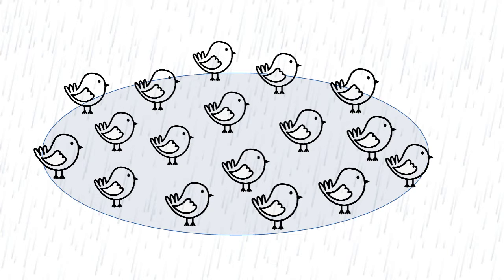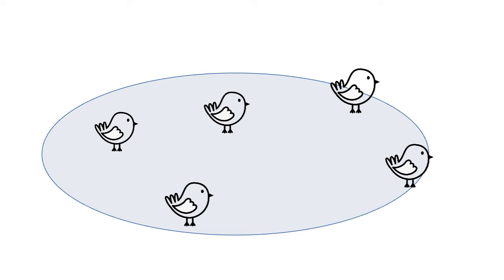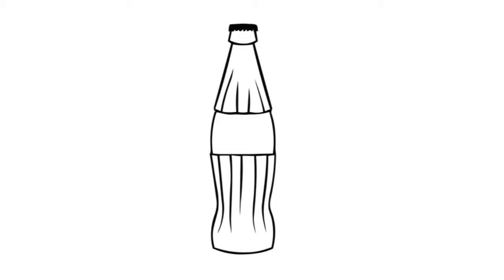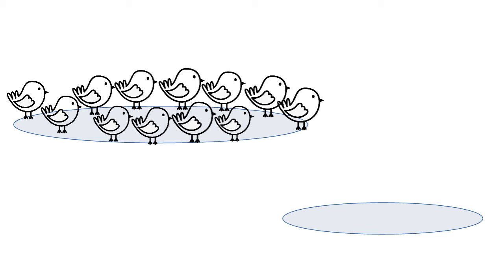Bottleneck occurs when a population is reduced down to a few individuals, for example, due to a natural disaster like a flood. Something that helps me to remember is to picture a bottle and visualize how the neck gets smaller and smaller as you move from the widest part of the bottle to the top.